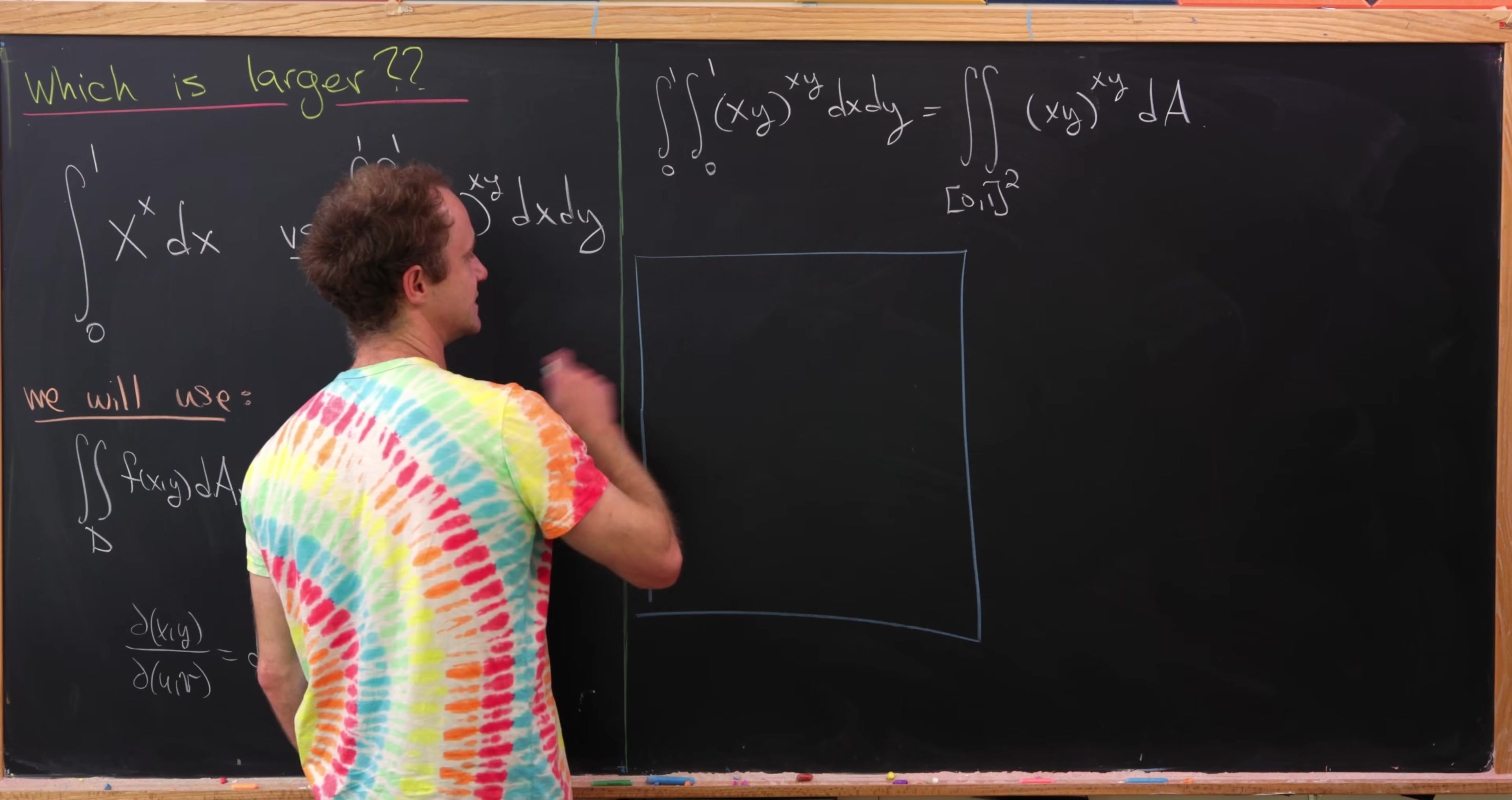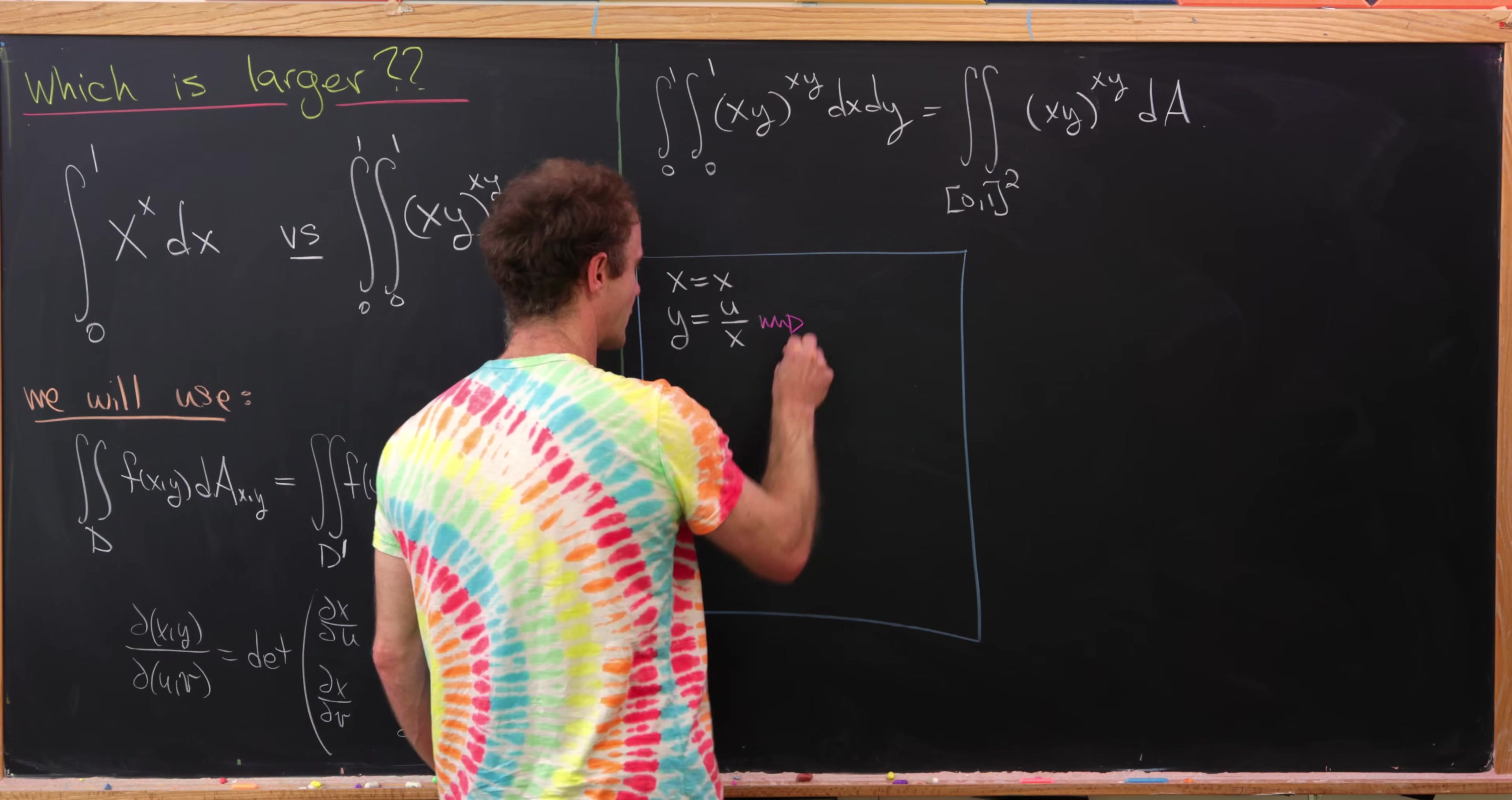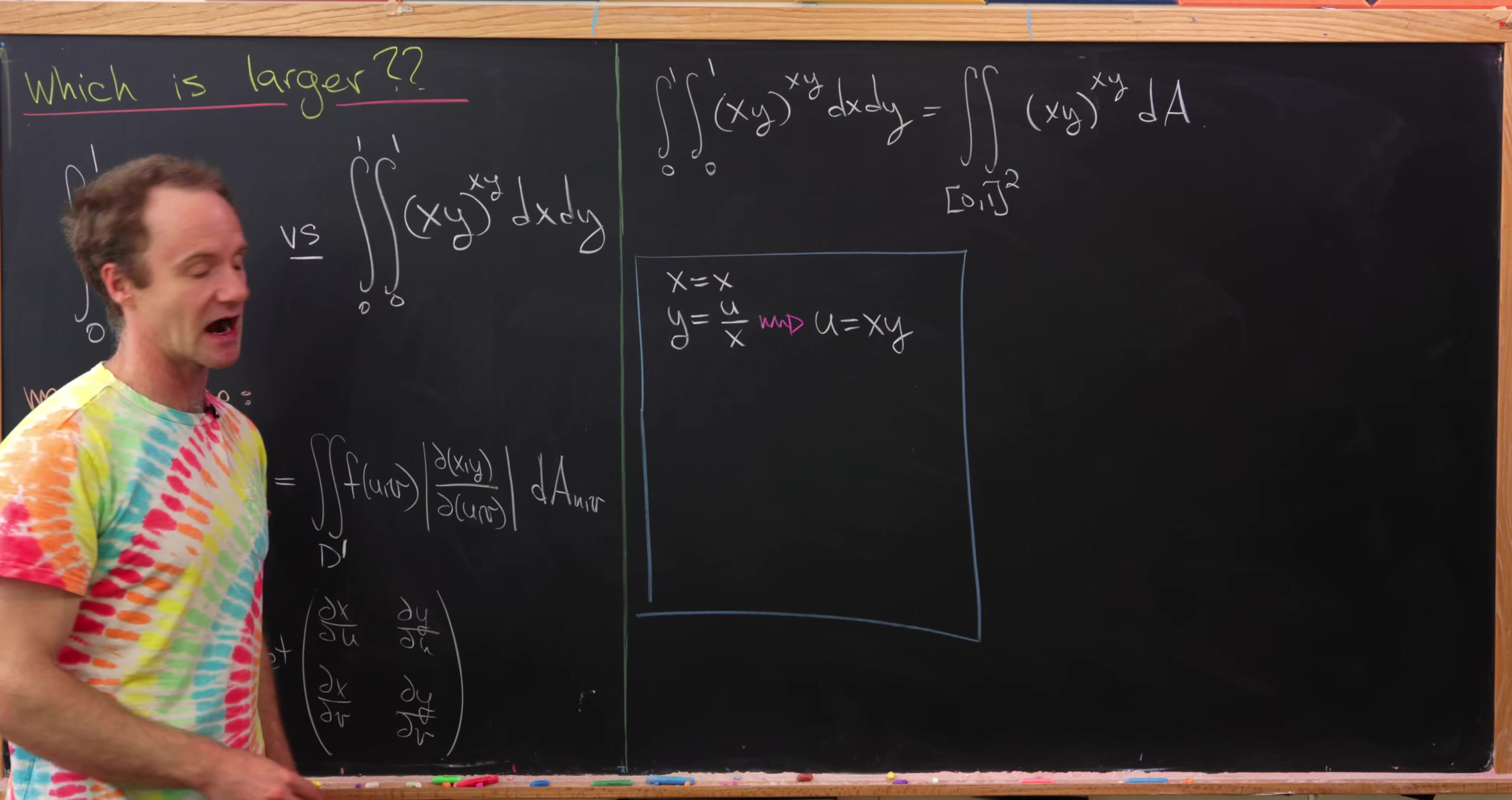What we'll do is use the change of variables x equals x, so we're not changing the x variable, and we'll take y equal to u over x. That might seem weird, but what that really gives us is u is equal to x times y, which makes sense now, because this is now of the form u to the u, which makes it look like this other single integral. Perhaps that's going to help us build our relation.